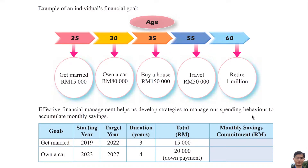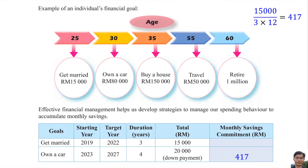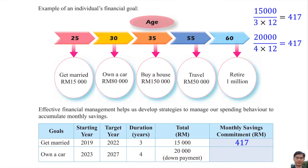Effective financial management helps us develop strategies to manage our spending behavior and accumulate monthly savings. This table shows that he needs three years to save 15,000 ringgit, so he needs to save about 470 ringgit per month. He then plans to save 20,000 ringgit in four years so that he can own a car, and he still needs to save 470 ringgit per month.